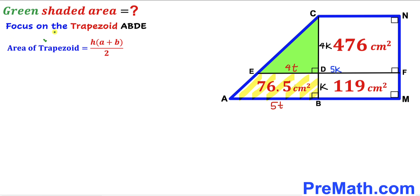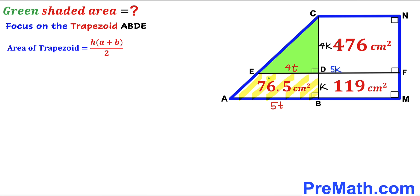Now let's focus on trapezoid ABDE and recall the trapezoid area formula: Area = h × (a + b) / 2. In our case, the height of the trapezoid is k and the two bases are 4t and 5t. The area of trapezoid ABDE has been given as 76.5 cm².